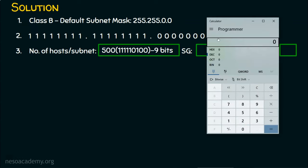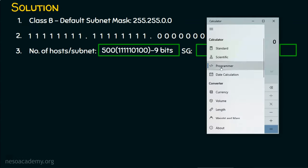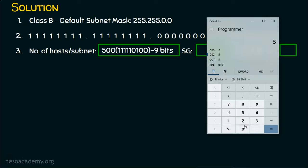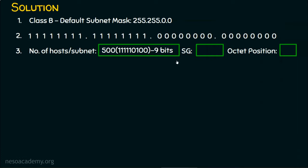I've brought in a calculator here and changed it to programmer mode. Typing in 500: the decimal equivalent is 500 and the binary equivalent is 111110100. Ignoring the leading zeros, it should always start with one — and counting from that leading one, nine bits are required. So obviously we require nine bits in order to get the number 500.